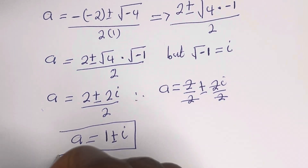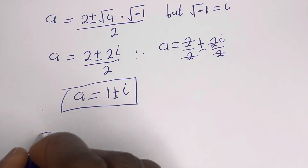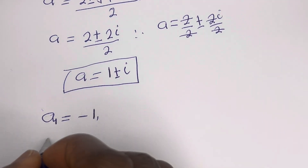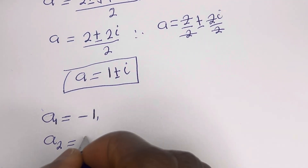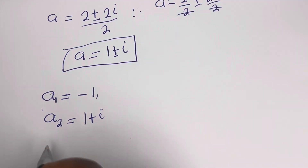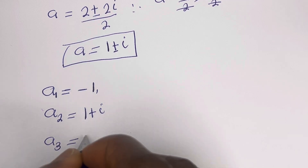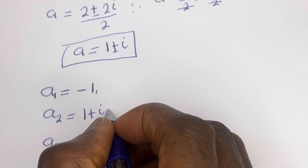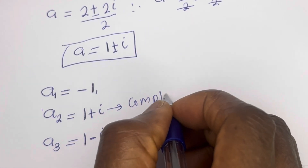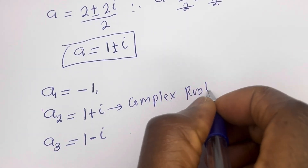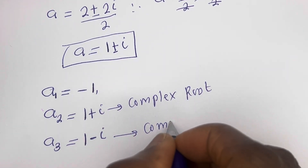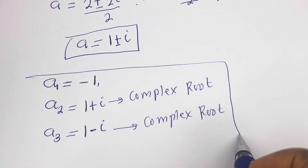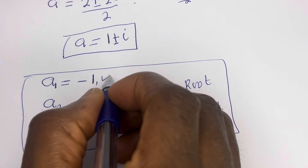These are the other values of a. Therefore our final answers are: a₁ equals minus 1, which is the real root. a₂ equals 1 plus i, which is a complex root. a₃ equals 1 minus i, which is also a complex root.